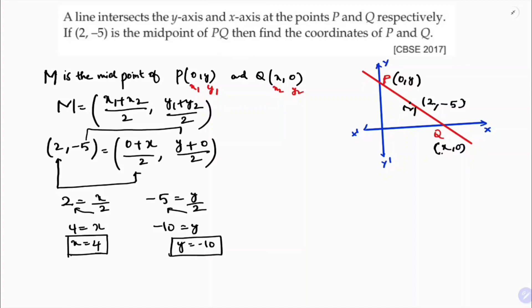So the coordinates of P and Q: P is 0 comma y which is 0 comma minus 10, and Q is x comma 0 which is 4 comma 0. The values of P and Q are 0 comma minus 10 and 4 comma 0 respectively.